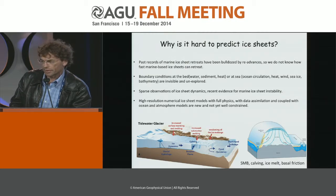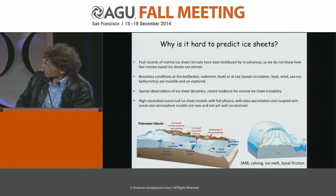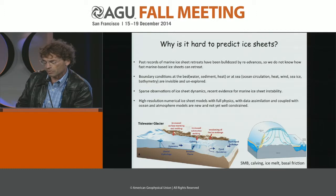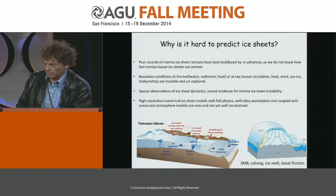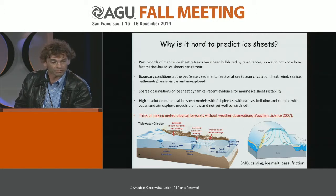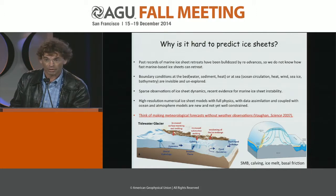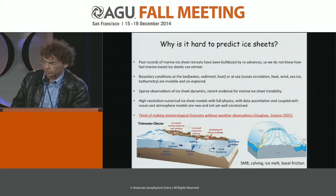We are moving towards higher-order models that couple the atmosphere and the ocean. These models are new and not very well constrained. To put this in context, I'll use a quotation from David Vaughan, who said it's very difficult to predict the meteorology if you don't have weather observations — and this is a little bit what we have for ice sheets.